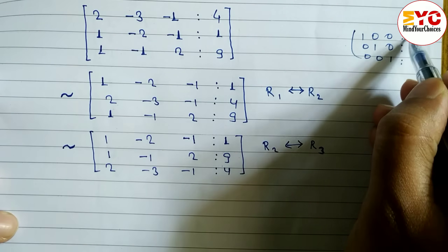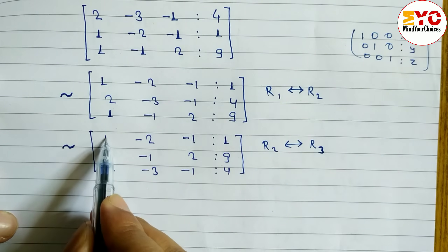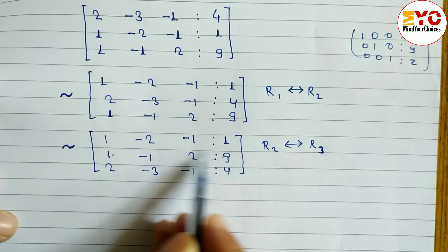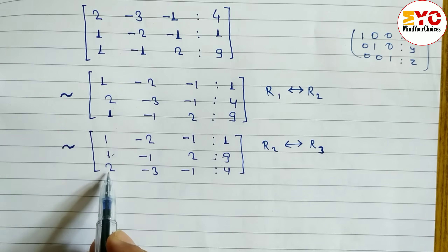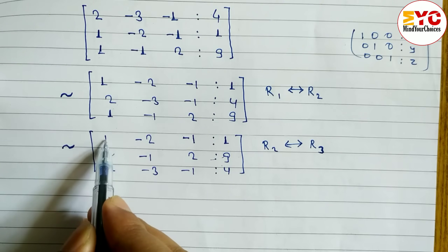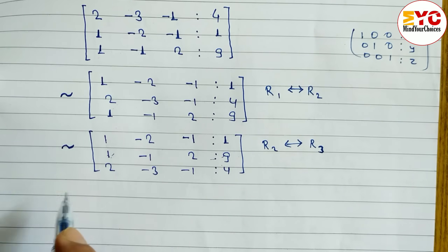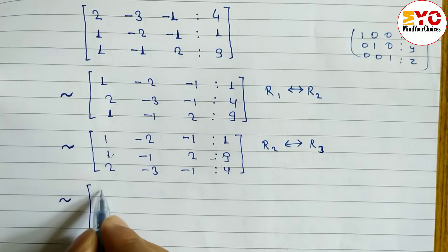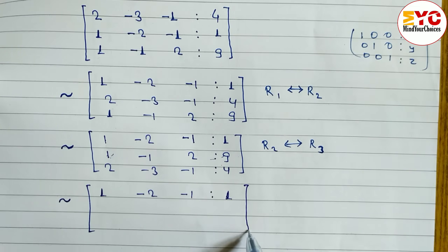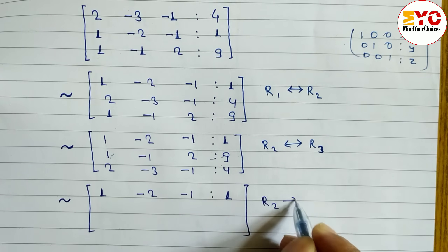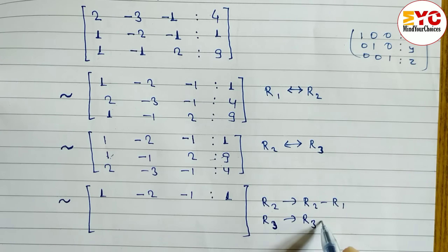Now we are ready to convert to the identity matrix form. We already have 1 in the top-left. To make zeros below it, we apply two operations: R2 becomes R2 minus R1, and R3 becomes R3 minus 2·R1.